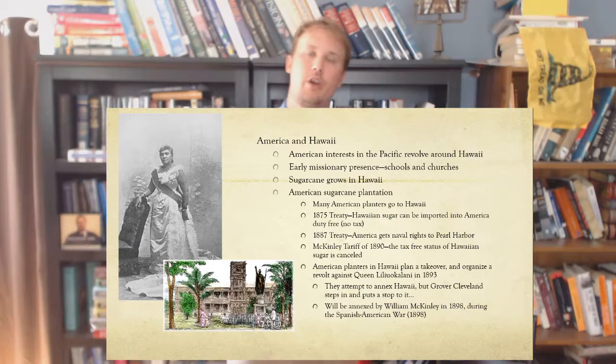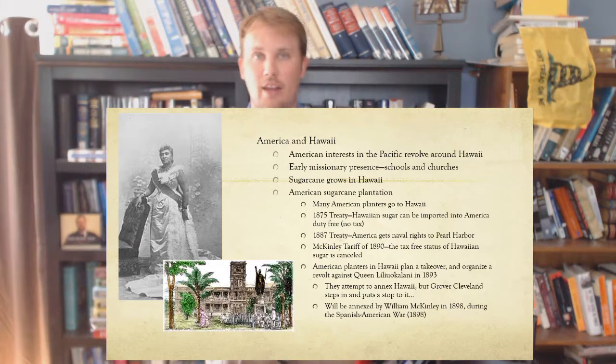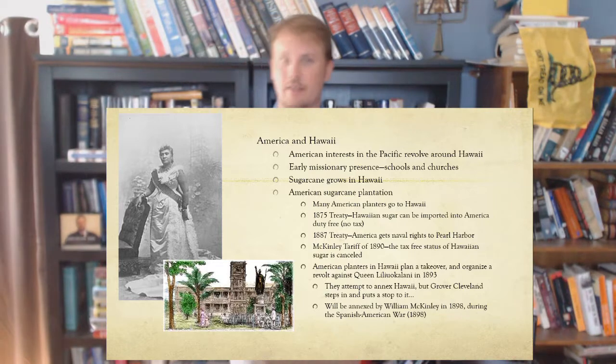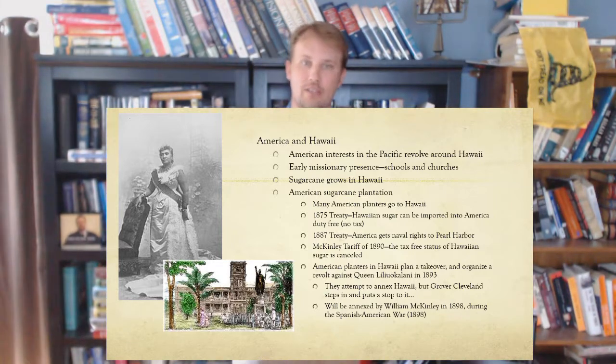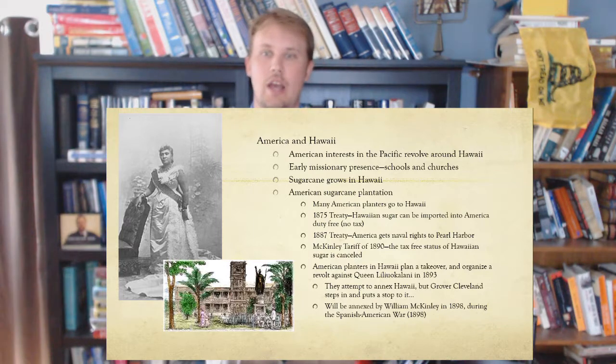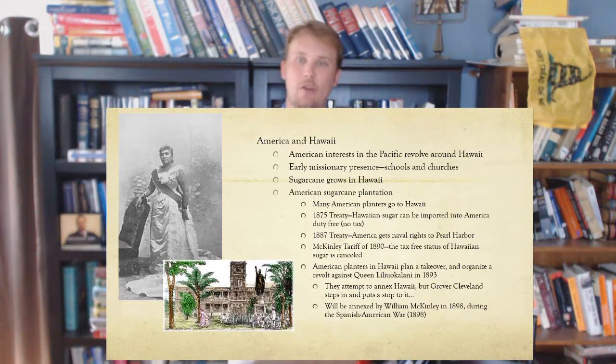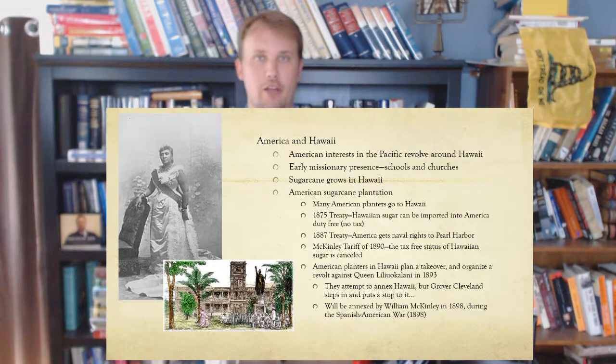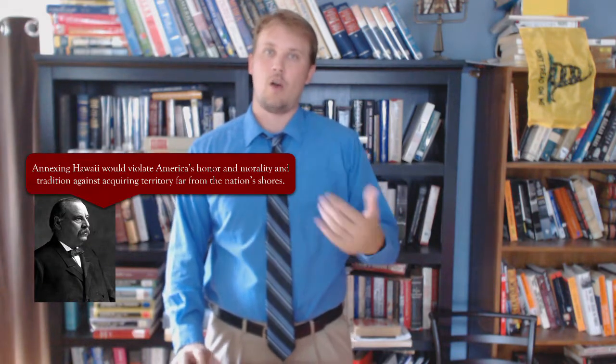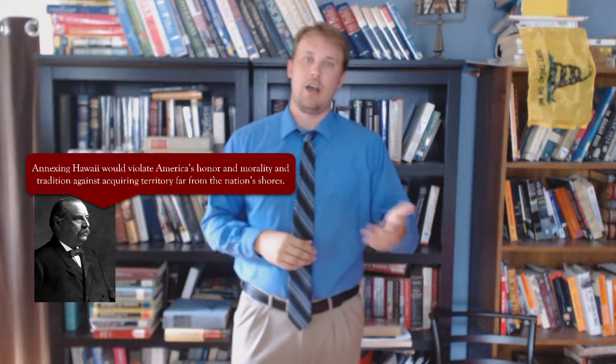American planters made a killing off sugar production in Hawaii. They reasoned that if they annexed Hawaii, their sugar would no longer be taxed. So they organized a revolt against Queen Liliuokalani in 1893 and attempted to annex Hawaii after removing her from power. But Grover Cleveland stopped them — he didn't think America should be annexing colonies around the world. Cleveland said annexing Hawaii would violate America's honor, morality, and tradition against acquiring territories far from the nation's shores. Hawaii would eventually get annexed in 1898 under the McKinley administration during the Spanish-American War.